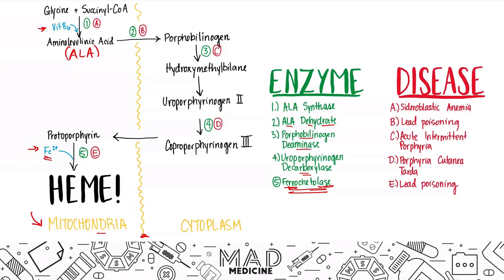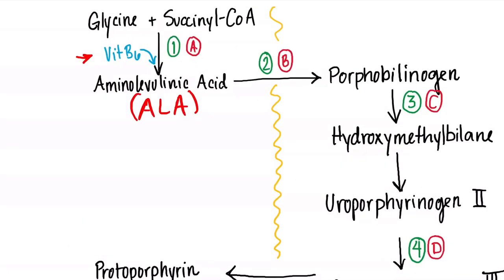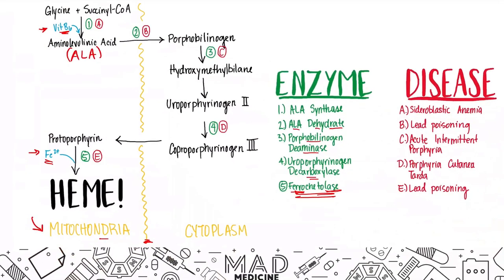Each of these enzymes corresponds to a pathologic state you need to know. First, if ALA synthase is impaired — also related to vitamin B6 deficiency — you're going to get sideroblastic anemia. Second, lead poisoning blocks ALA dehydratase, meaning ALA cannot be converted to porphobilinogen. As a result, you will have high levels of ALA in the body when lead poisoning is present.